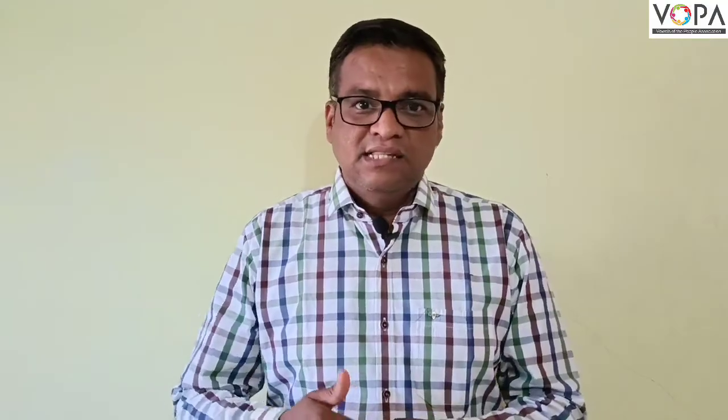Animals are the biotic factors. Animals are heterotrophic — they cannot produce their own food. In the ecosystem we have primary consumers, secondary consumers, and tertiary consumers.